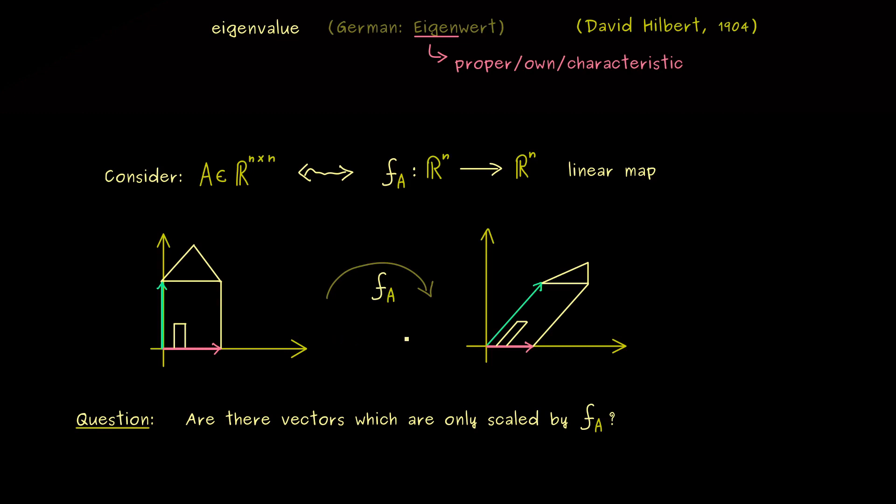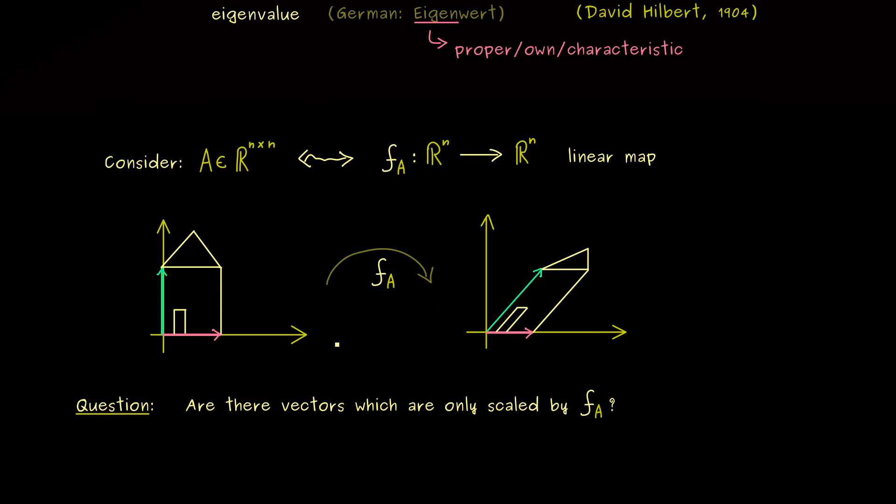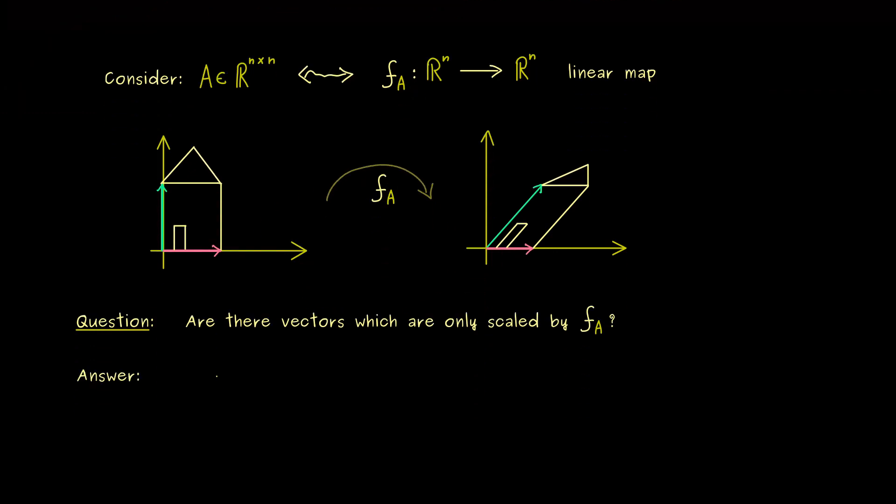And I can already tell you, these special vectors we will call eigenvectors. And indeed, we can already answer this question, because we know how to deal with linear maps. Namely, f_A just acts by the matrix vector multiplication. Hence, Ax is the image of x under f_A. And now we want that this image goes in the direction of x again. Hence, the only thing we can have is a scalar λ in front of this x.